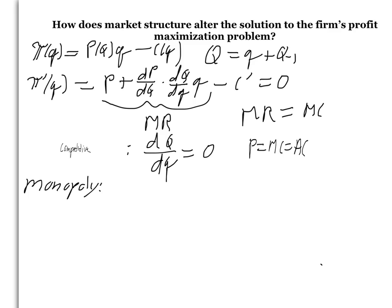Now let's consider the case of monopoly. Here, firm output is equal to industry output, so that dQ d little q is equal to 1.